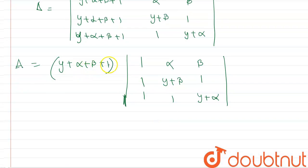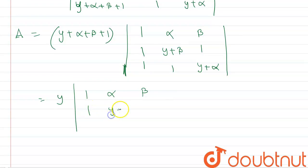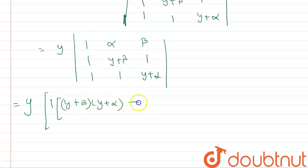After the column operation, we expand along the first column. The first column entries are all y, so we factor out y. We then expand: y times the 2x2 minor obtained by hiding the first row and first column gives (y+beta)(y+alpha) - 1·1. Then minus 1 times the minor from hiding the second row gives alpha·(y+alpha) - related terms.